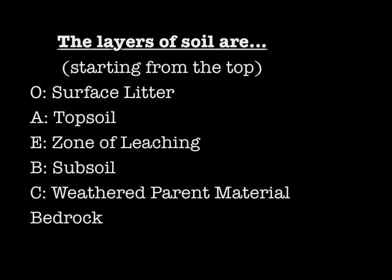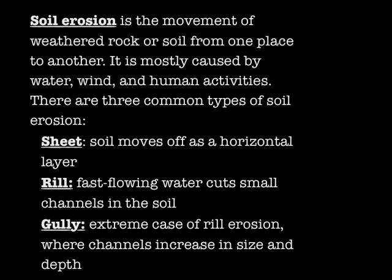Soil erosion is the movement of weathered rock or soil from one place to another. It is mainly caused by wind, water, and human activities. The major types of soil erosion are sheet, rill, and gully erosion.